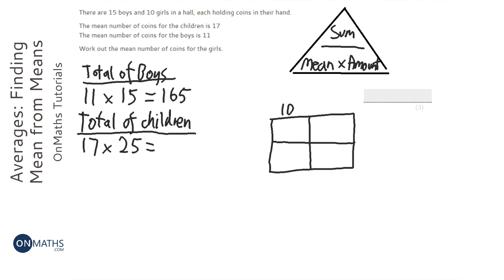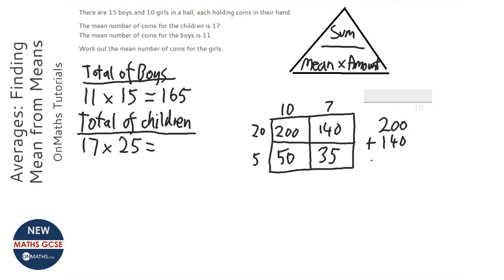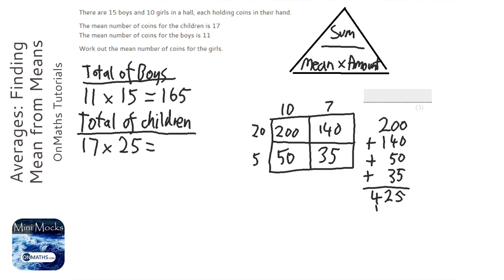If you've got a calculator, then obviously you can use a calculator. That's 200, 140, 50, and 35. So let's add those together: 200, 140, 50, 35... So 425.